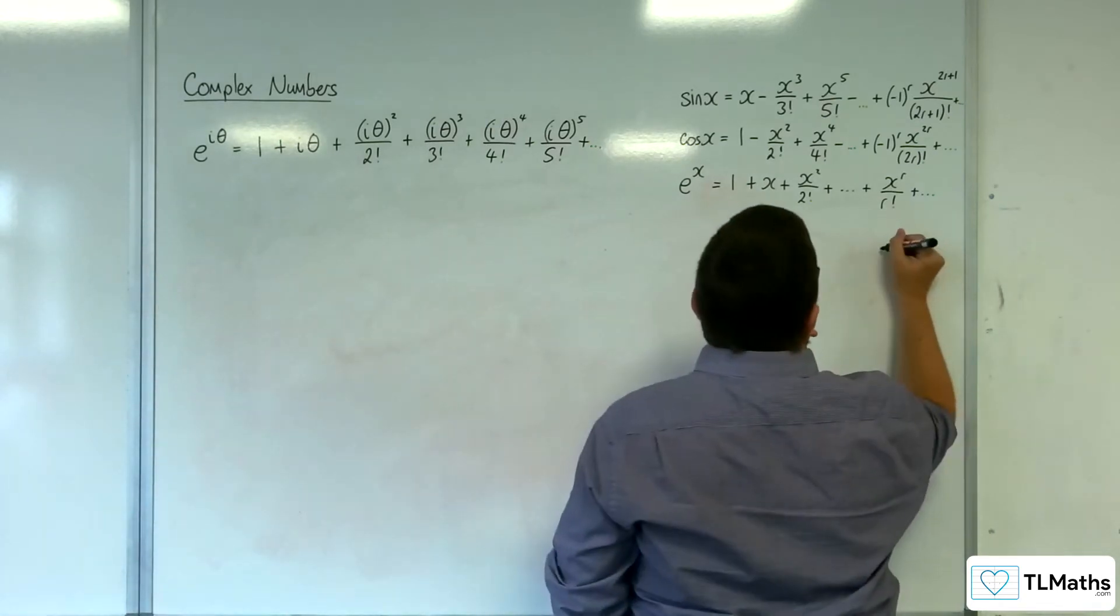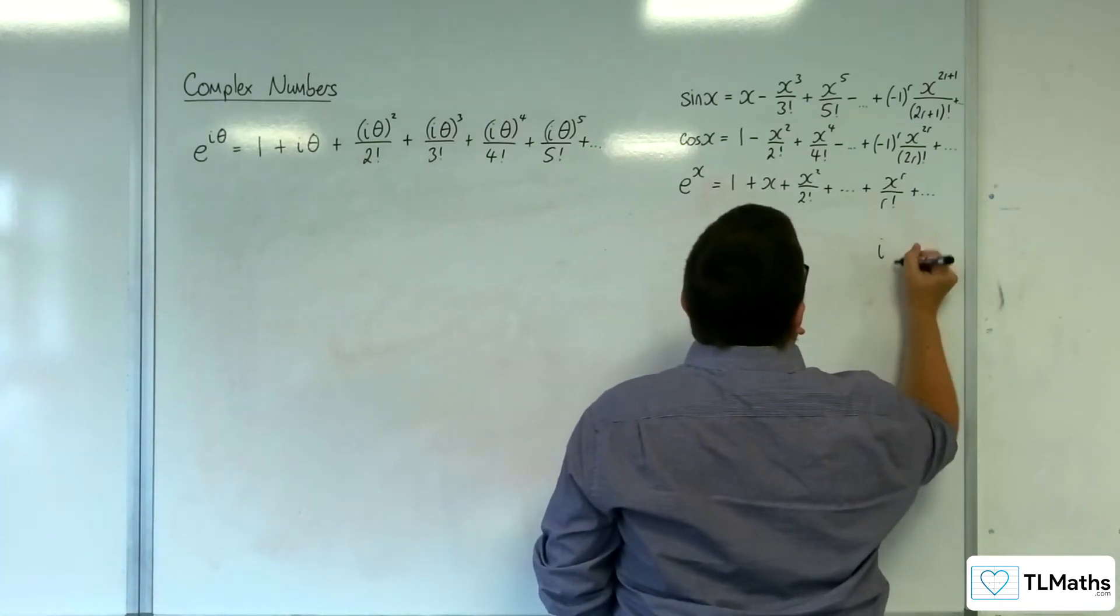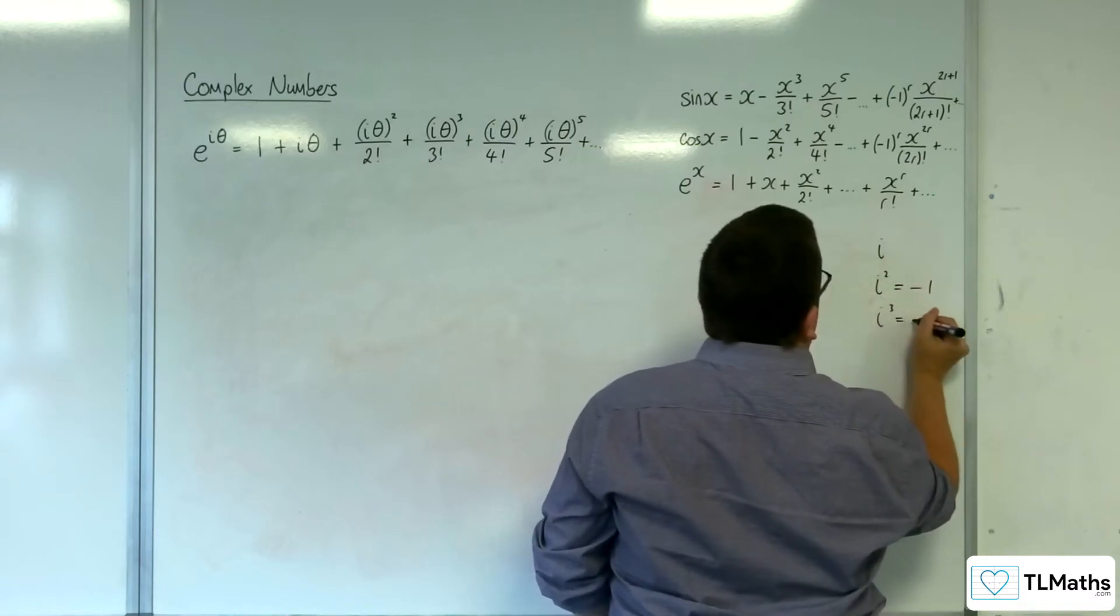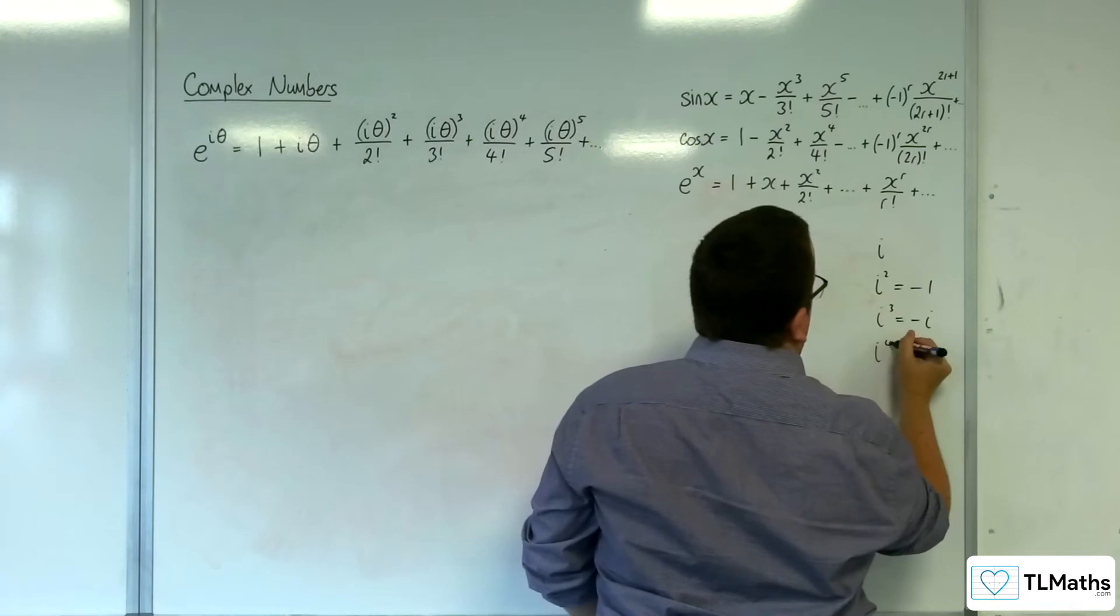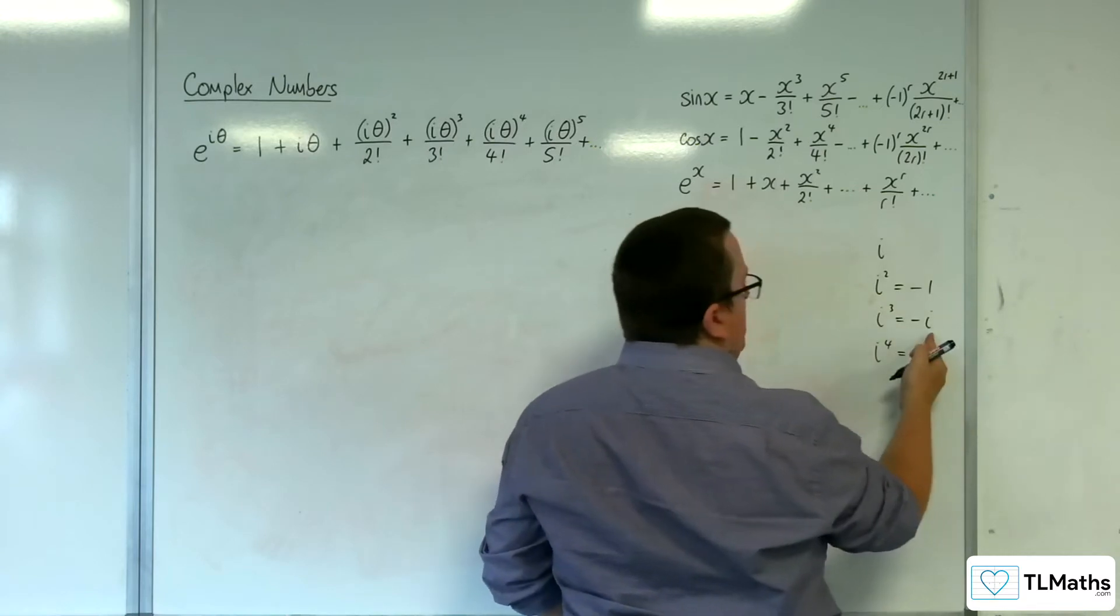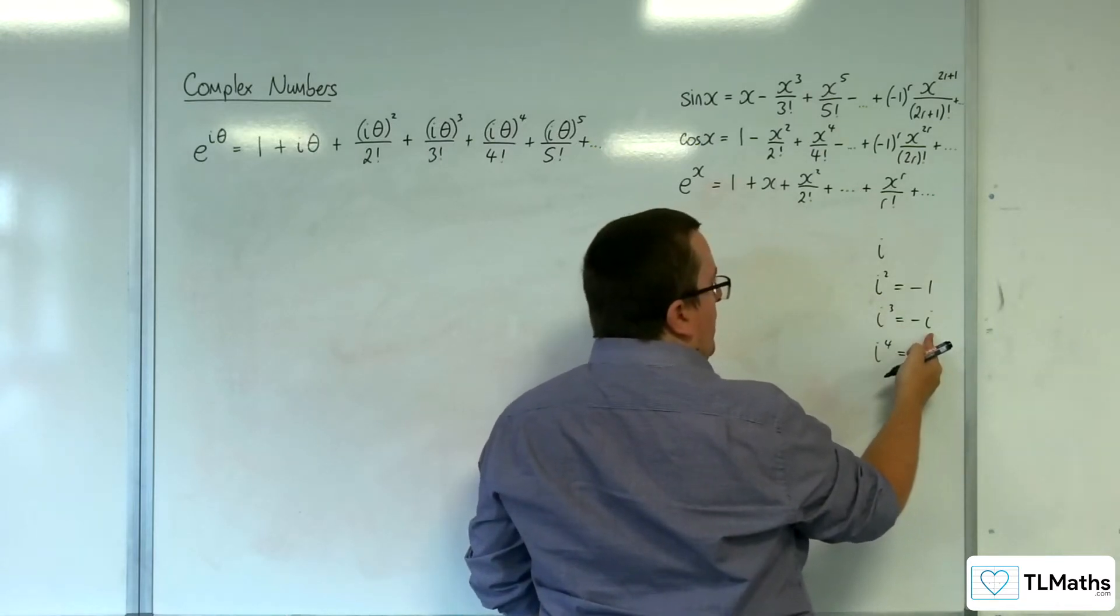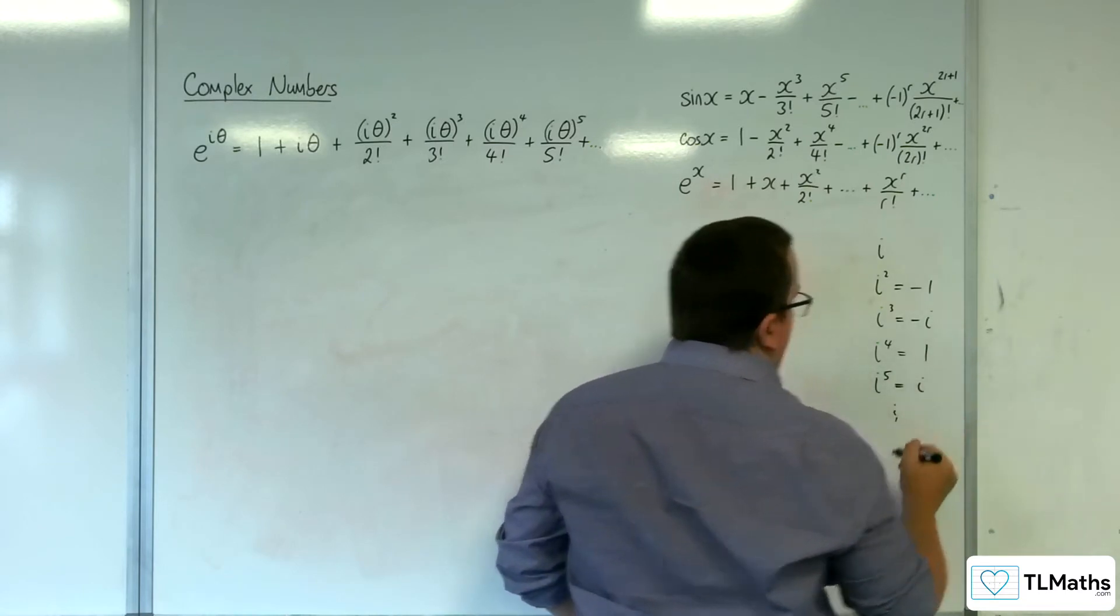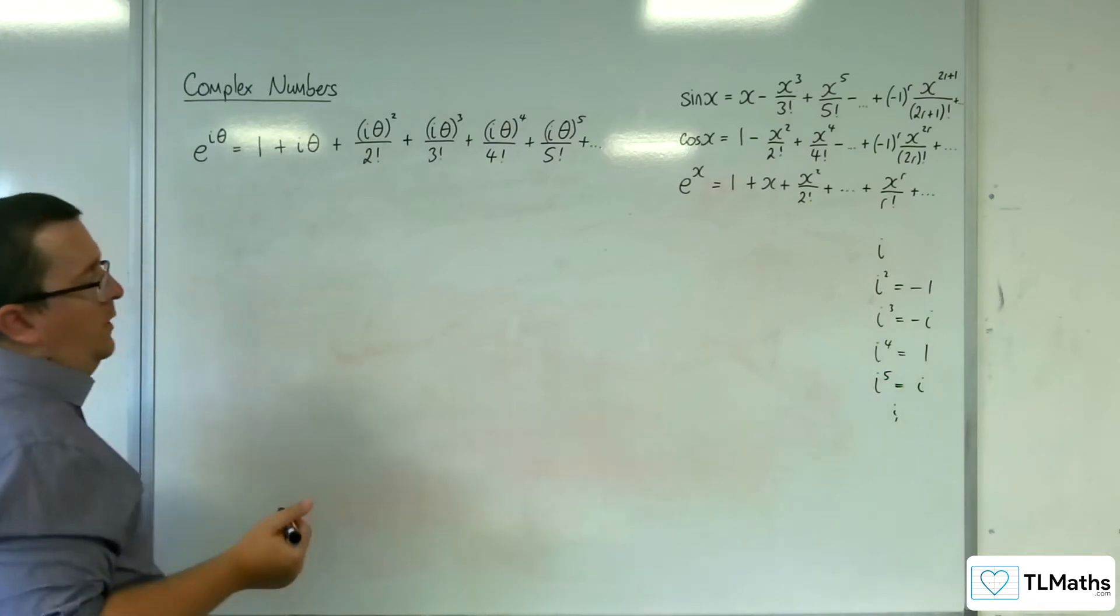So, quick little reminder here. So you've got i, then you've got i squared is minus 1, i cubed is minus i, i to the 4, so minus i times by i will get you back to 1. Then i to the 5 will be i, and so on and so forth.